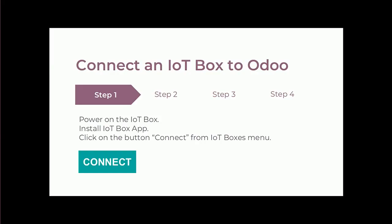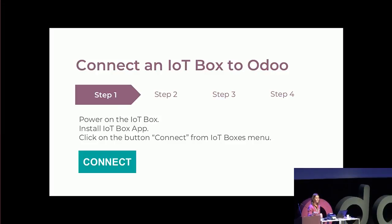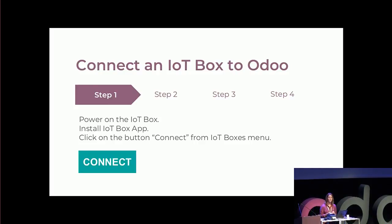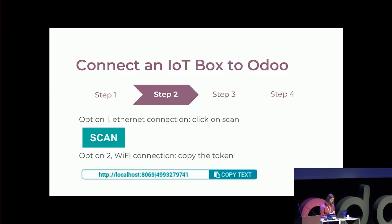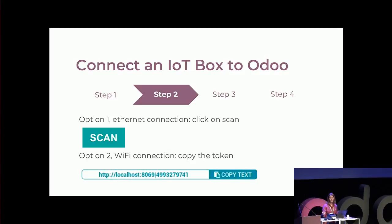Now that I have plugged all the cables into the box, the Bluetooth is active on my device, and the devices are connected to the Wi-Fi, the next step is to connect the box to my database. I first power on the box, then go back on my database where I install the IoT box application. In the IoT boxes menu, there is a big Connect button to click. If my box is connected with an ethernet cable, I just click Scan and the database will find the box and connect to it. The IoT box is already connected to my database, and the devices too.